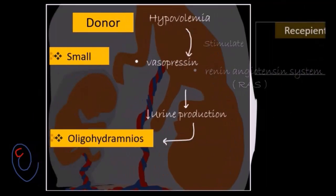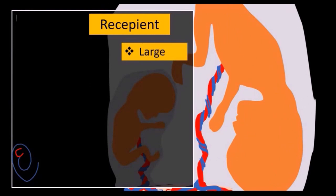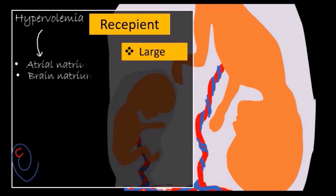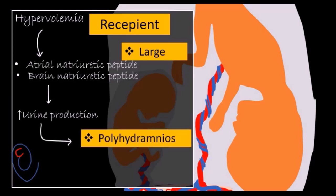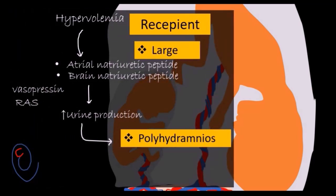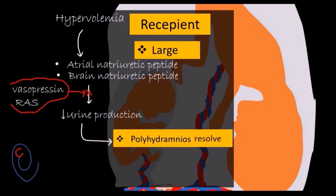On the other hand, the recipient will become large, and the hypervolemia will stimulate substances that increase urine production, such as atrial natriuretic peptides. This will form polyhydramnios in the recipient's sac. As the disease progresses, the increasing levels of renin-angiotensin and vasopressin will pass from the donor to the recipient through vascular connections. This will decrease urine production in the recipient, and consequently polyhydramnios will decrease or resolve, and the excess fluids accumulate inside the recipient's body.